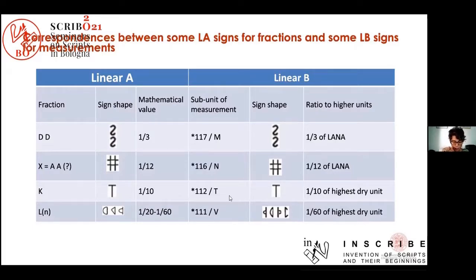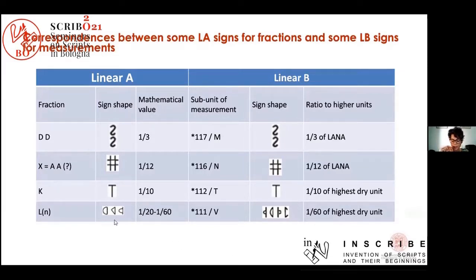The shape of fraction K, whose suggested value is one-tenth, is identical to Linear B sign 112, which represents 1 over 10 of the largest weight capacity measure. Finally, the shape contained in Linear B sign 117 represents 1 over 60 of the largest weight capacity measure.